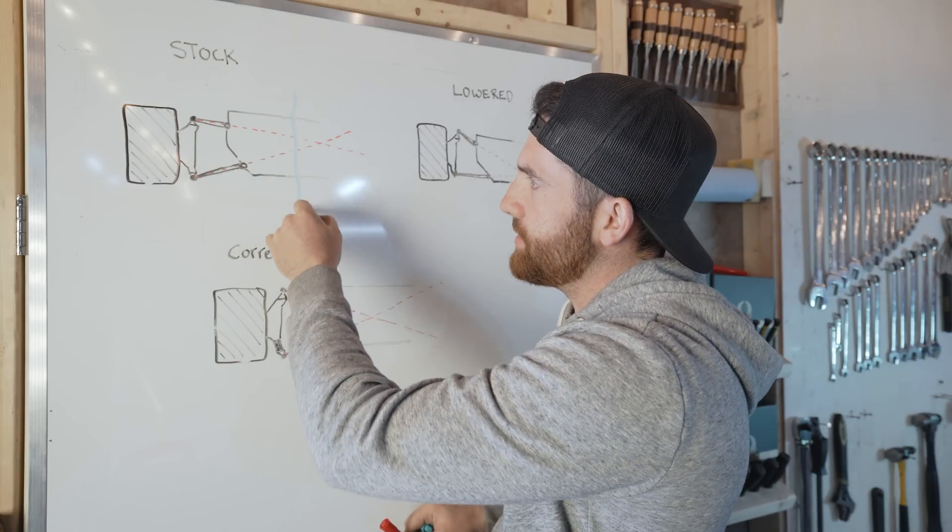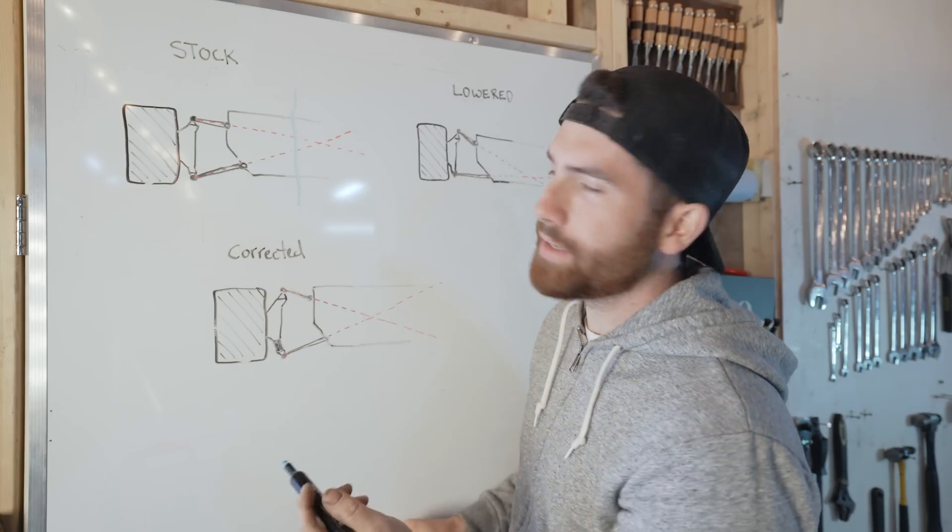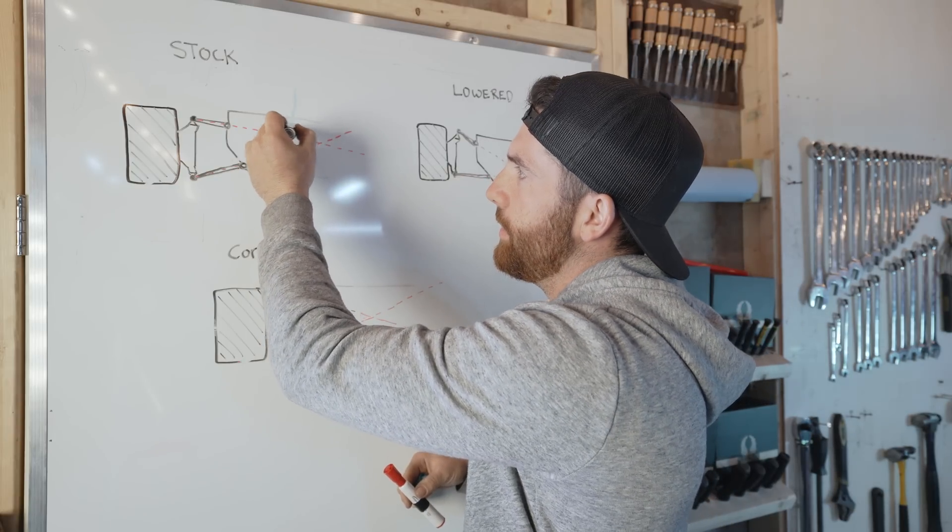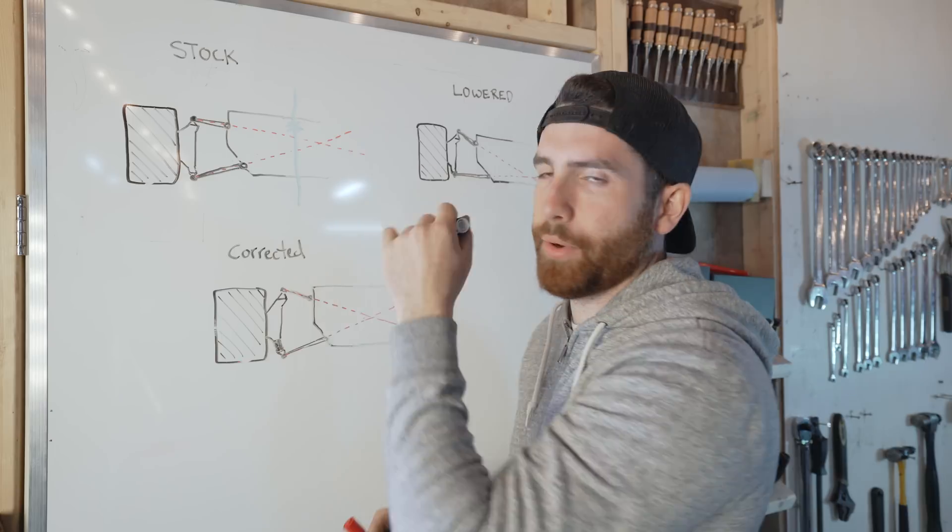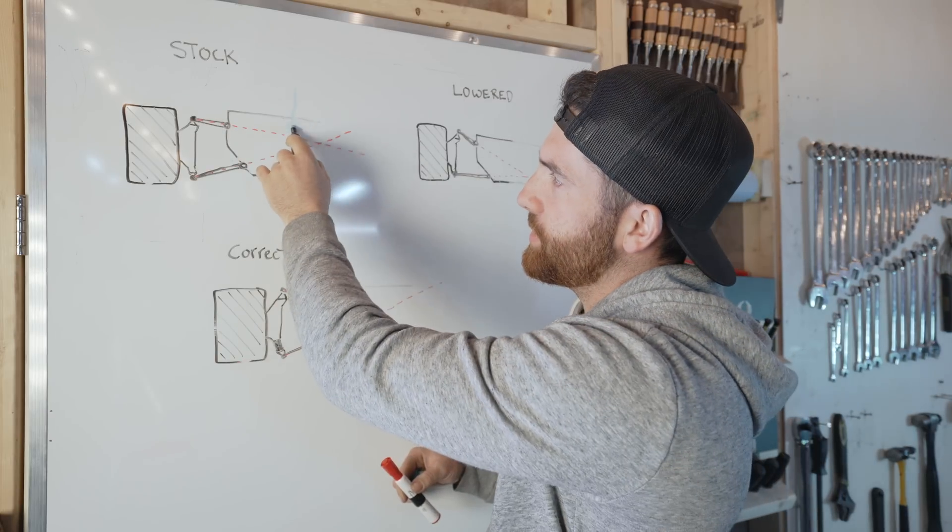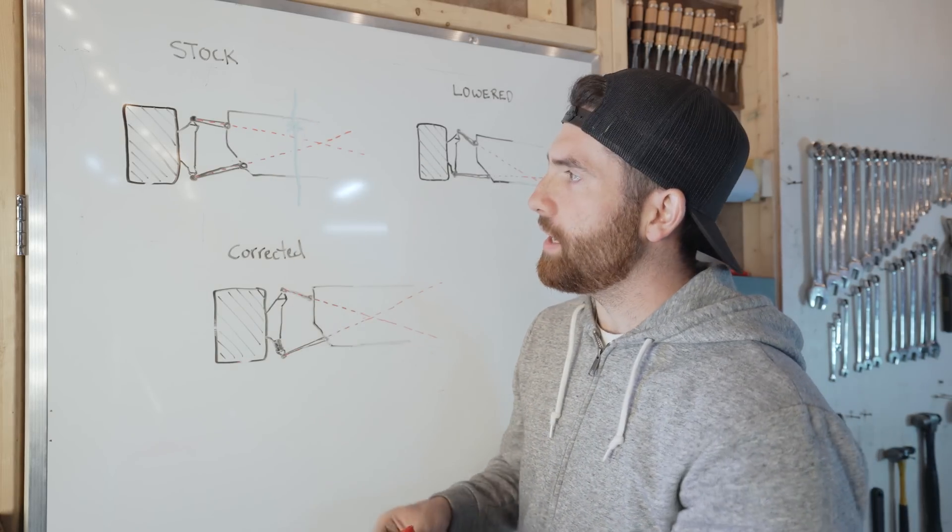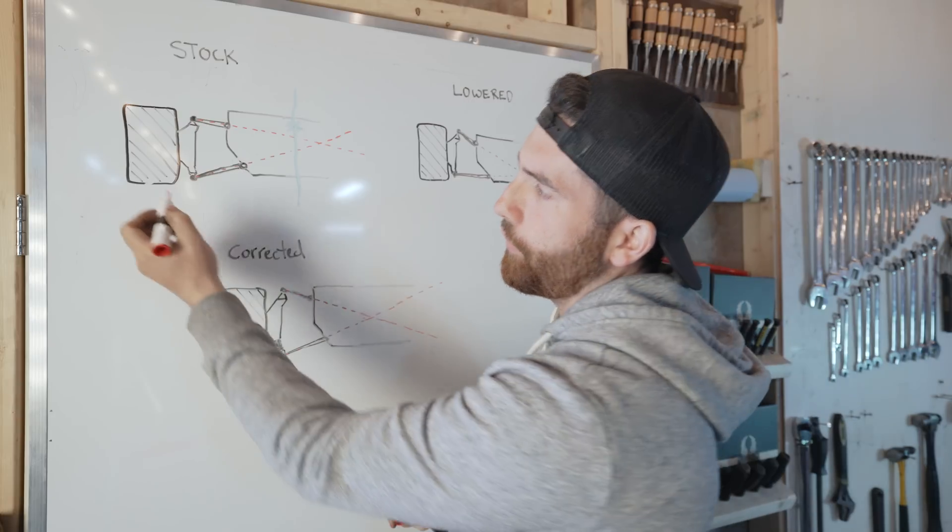Now how you find your roll center is you draw a line that demonstrates the center line of the car. Let's say it's here, this is the center line of the car, and let's say our center of gravity is around here.